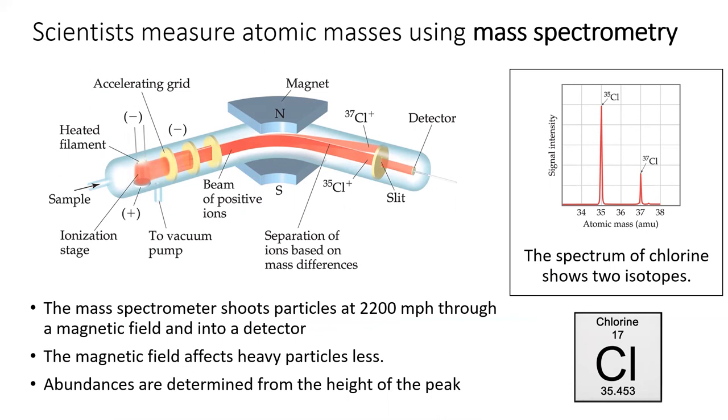Take a look at this mass spectrum of chlorine, which shows the two isotopes chlorine-35 and chlorine-37. Now, look at the atomic mass of chlorine, 35.453. Does it make sense that the peak for chlorine-35 is about three times as large as the peak for chlorine-37?